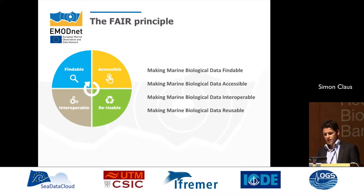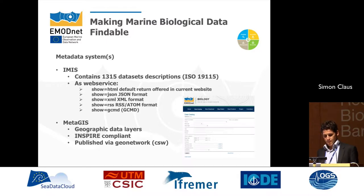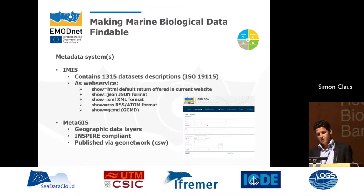For the FAIR principles — findable, accessible, interoperable, and reusable — how do we do that? For findable, we have a set of metadata systems. For describing biological collections we use EMIS, an in-house system developed by the Flanders Marine Institute, which creates ISO 19115-compliant datasets exportable as a web service in formats including plain HTML, JSON, XML, RSS, or GCMD. We also have a second metadata system describing geographic data layers, which is INSPIRE-compliant and published through GeoNetwork.